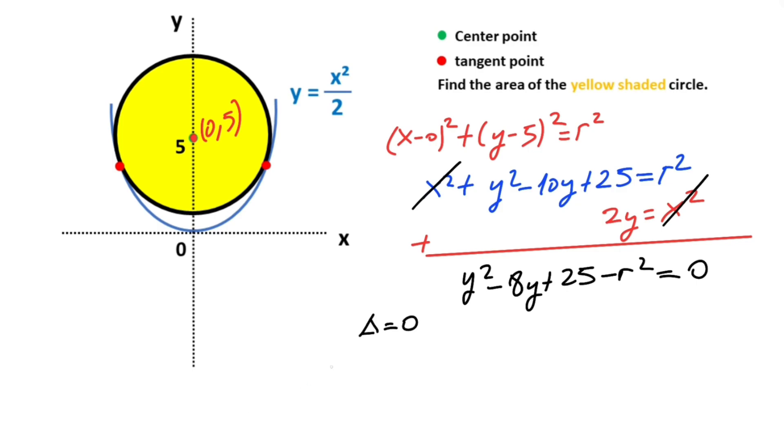Delta should be equal to zero because of tangency. We know that delta equals b² - 4ac. Therefore, 64 - 4 × 1 × (25 - r²) = 0.